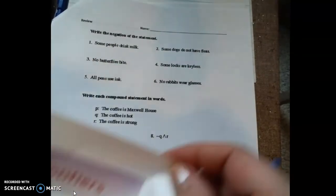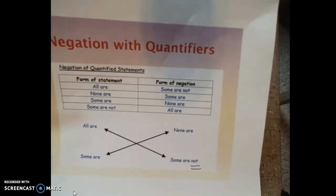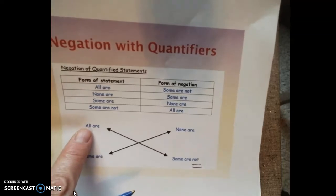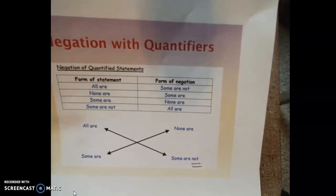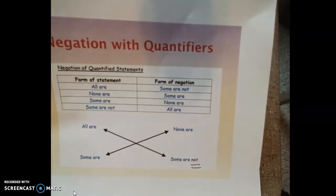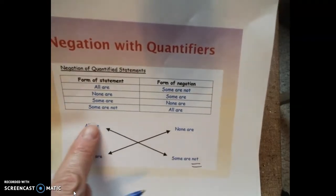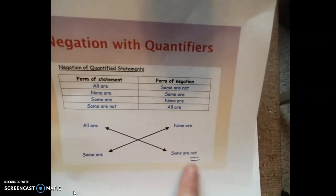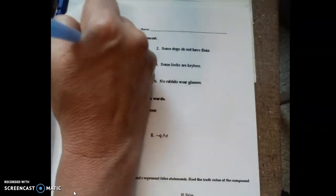I also posted a logic video. For negation: easy ones like 'it's sunny outside' become 'it's not sunny outside.' But if I say 'all teachers are amazing,' the negation is not 'none are amazing' — because both of those could be false. Remember: if one statement is true, the other has to be false. So to negate 'all professors are amazing,' you have to say 'some professors are not amazing' — that would be true, making the original false. Print out the negation chart.